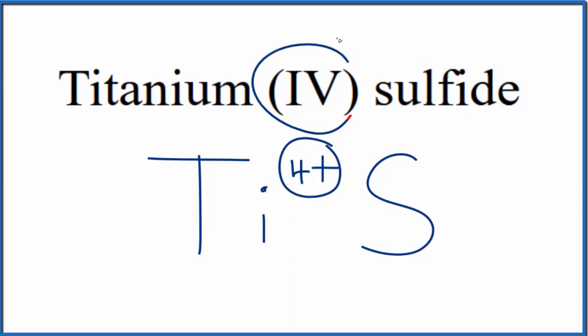We know that titanium is four plus from the Roman numeral here. Sulfur, that's in group sixteen, sometimes called 6A, it has a two minus ionic charge.